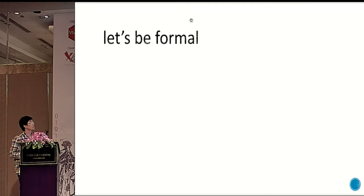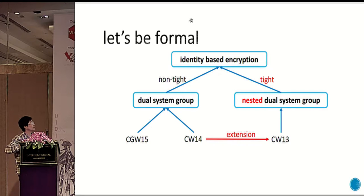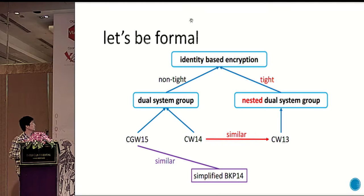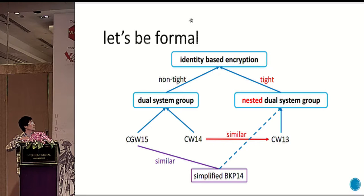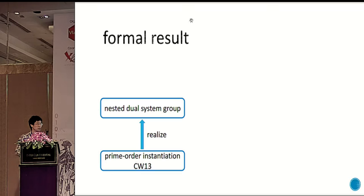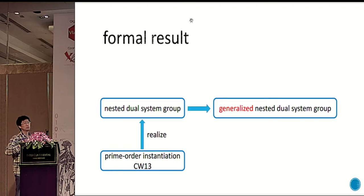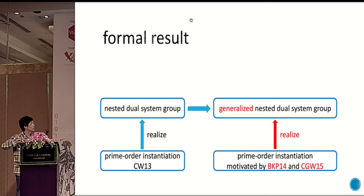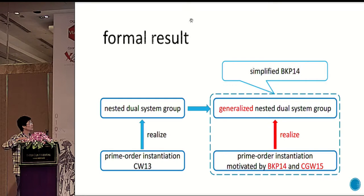The discussion above is informal. For something more formal, we use the dual system group, which describes the normal space and semi-functional space formally. We know that CW13 is extended from CW14 and they are similar. We found our simplified BKP is also similar to an instantiation of a dual system group. So we asked whether we can put this in the framework of this concept. Fortunately we can, with some simple generalization. We first generalize the nested dual system group, motivated by BKP14 and CW15, and realize it using a prime-order group. This implies an IBE which is exactly the simplified BKP we showed before.